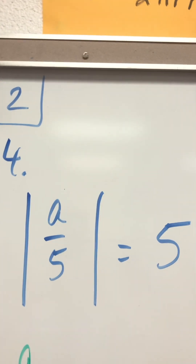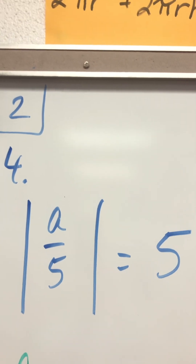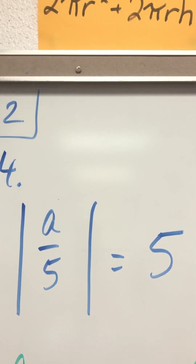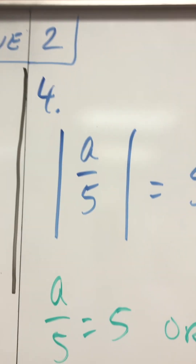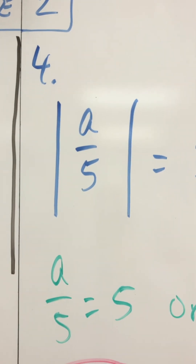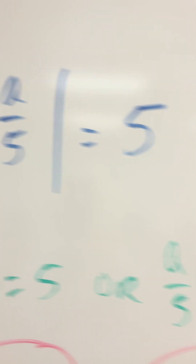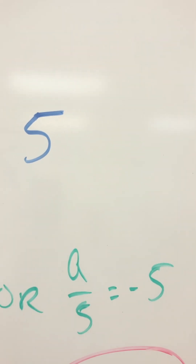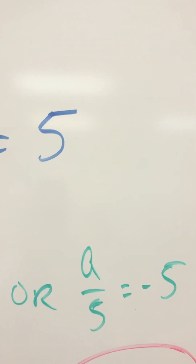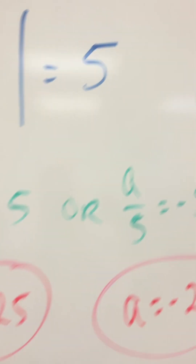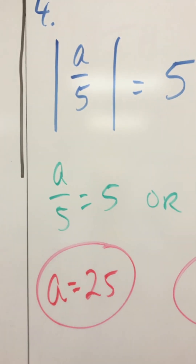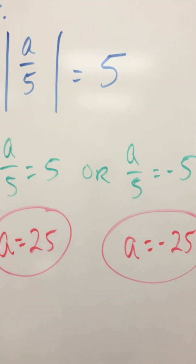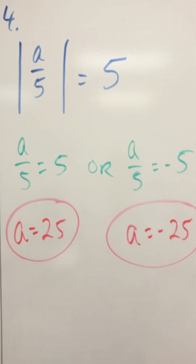Absolute value of a divided by 5 equals 5. So a over 5 equals 5 or a over 5 equals negative 5. a equals positive 25 or a equals negative 25. Two answers.